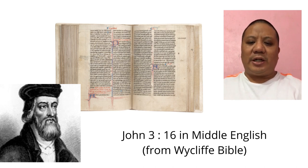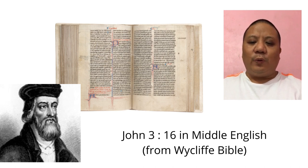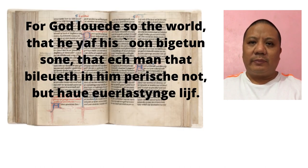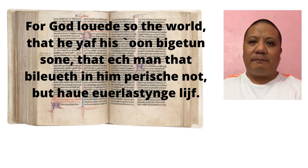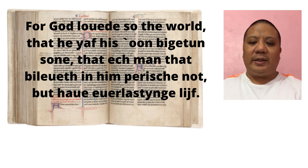Let me now share with you John 3:16 written in Middle English. This comes from the Wycliffe Bible, published around 1382 to 1395. 'For God loved so the world, that he gave his one begotten Son, that each man that believeth in him perish not, but have everlasting life.' That was John 3:16 from the Wycliffe Bible in Middle English.